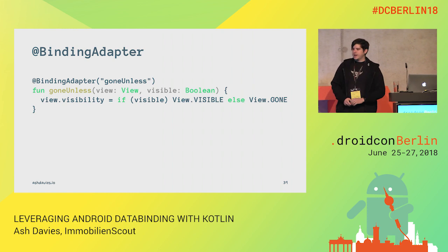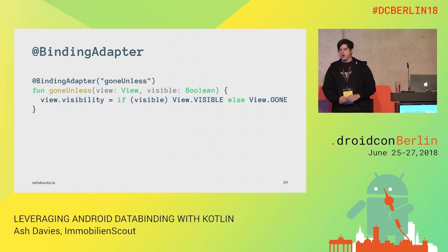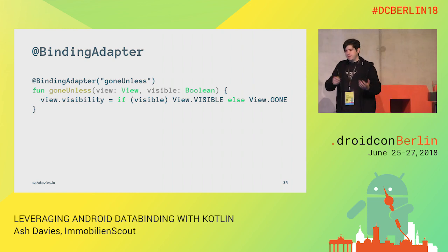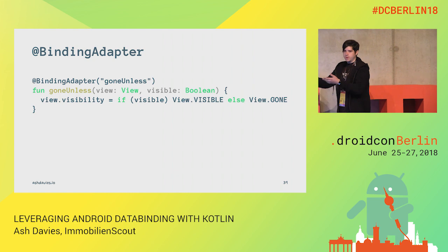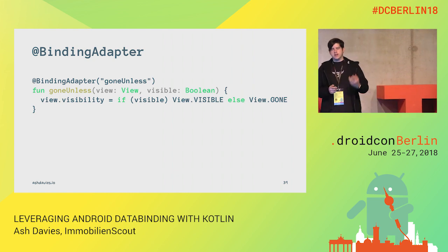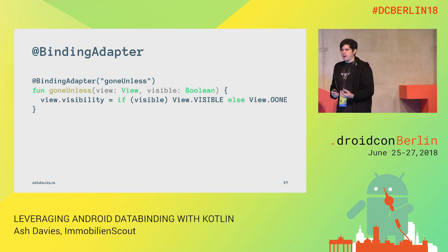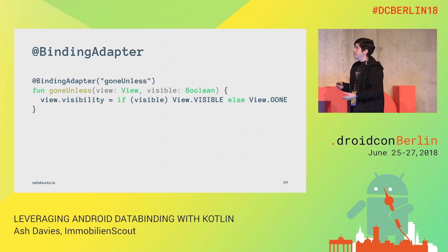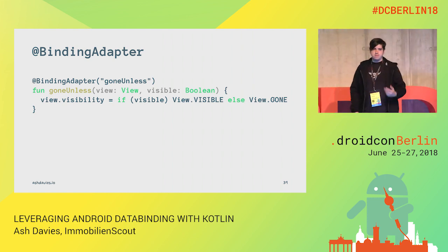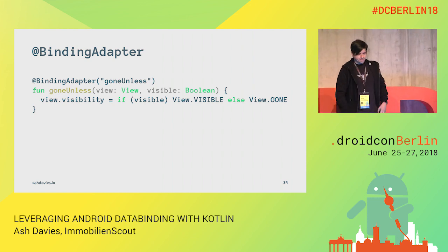We can create a binding adapter with a goneUnless property and then decide between View.VISIBLE and View.GONE. We've moved this conditional operator that we had in our XML layout into an actual Kotlin testable function.